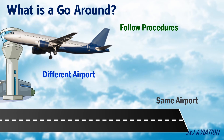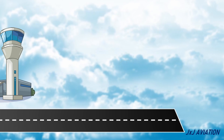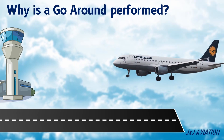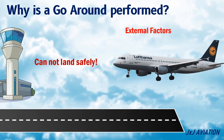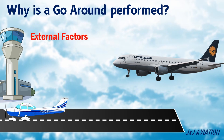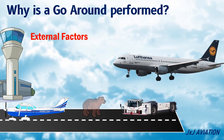Let's look at why and how a go-around is performed. The decision to perform a go-around is made if the aircraft cannot land safely on the runway. This may be due to external or internal factors. The external factors include an aircraft, or any ground vehicle, or animals on the active runway, or sudden gusts of wind or crosswinds.